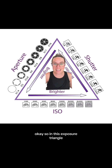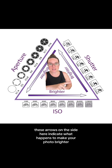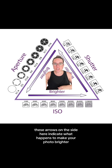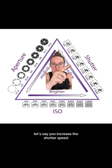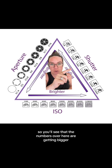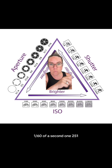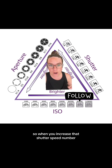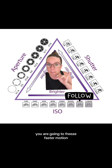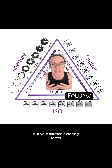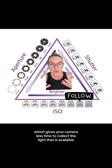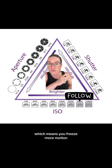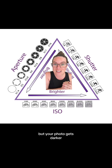In this exposure triangle, these arrows on the side here indicate what happens to make your photo brighter. Let's say you increase the shutter speed — you'll see that the numbers over here are getting bigger: 1/60th of a second, 1/250, 1/1000th of a second. When you increase that shutter speed number, you are going to freeze faster motion, but your shutter is closing faster, which gives your camera less time to collect the available light, which means you freeze more motion but your photo gets darker.